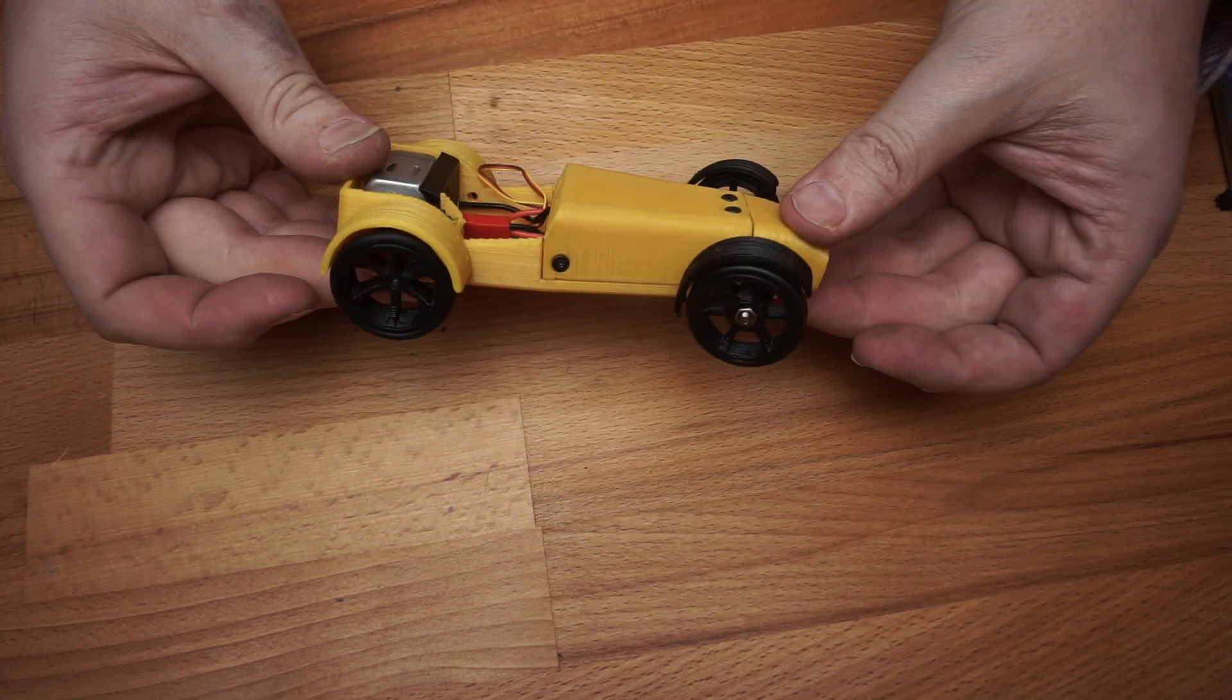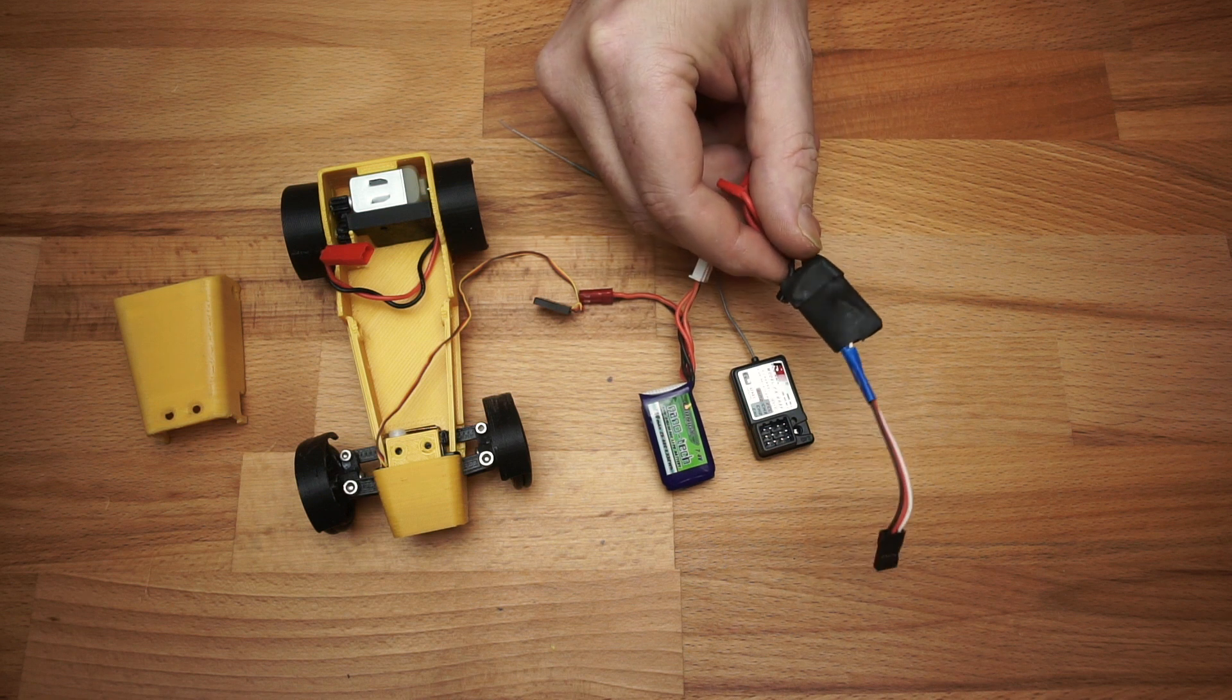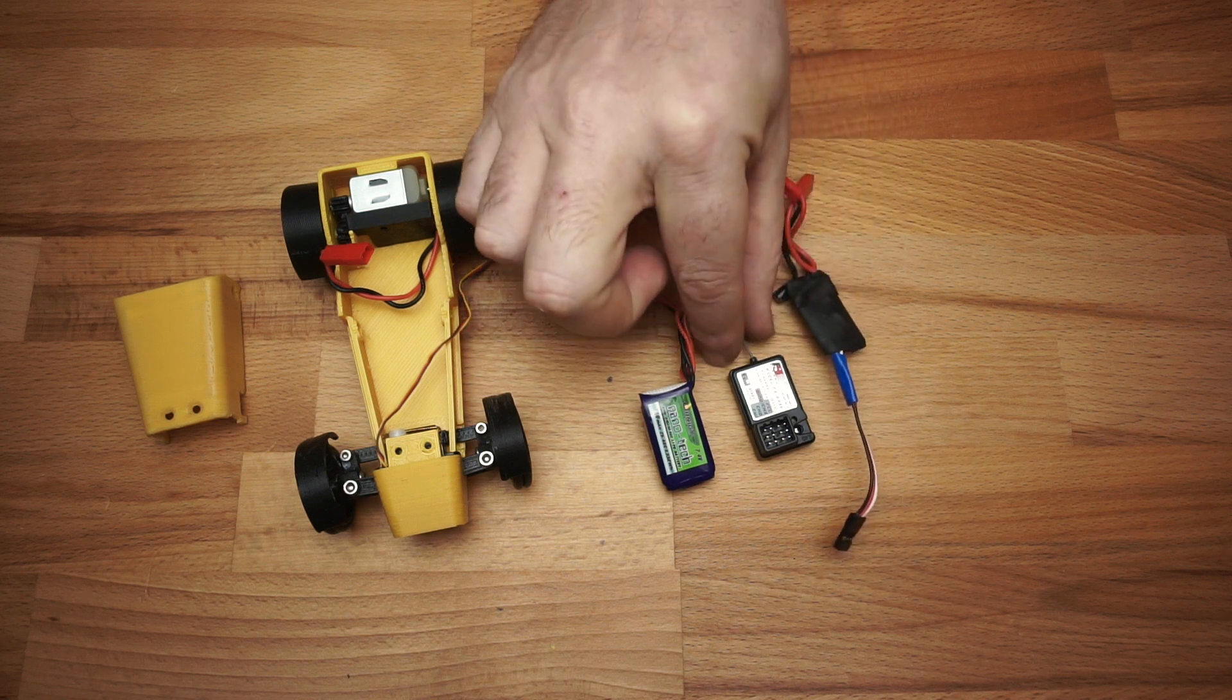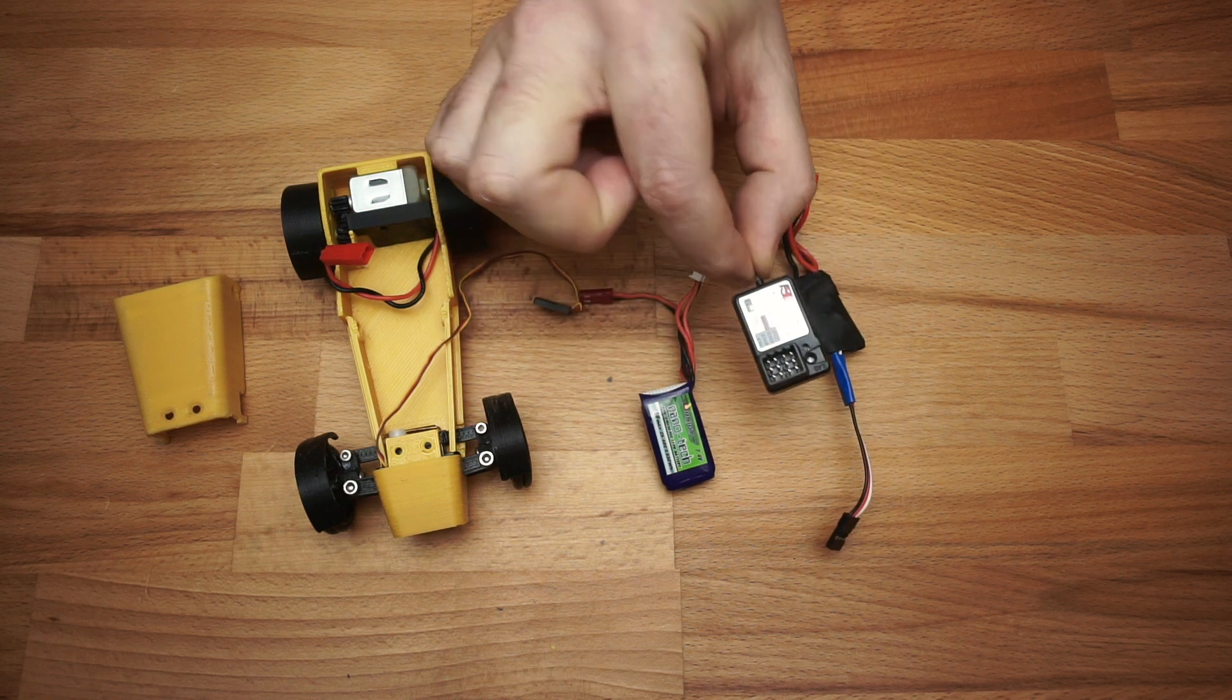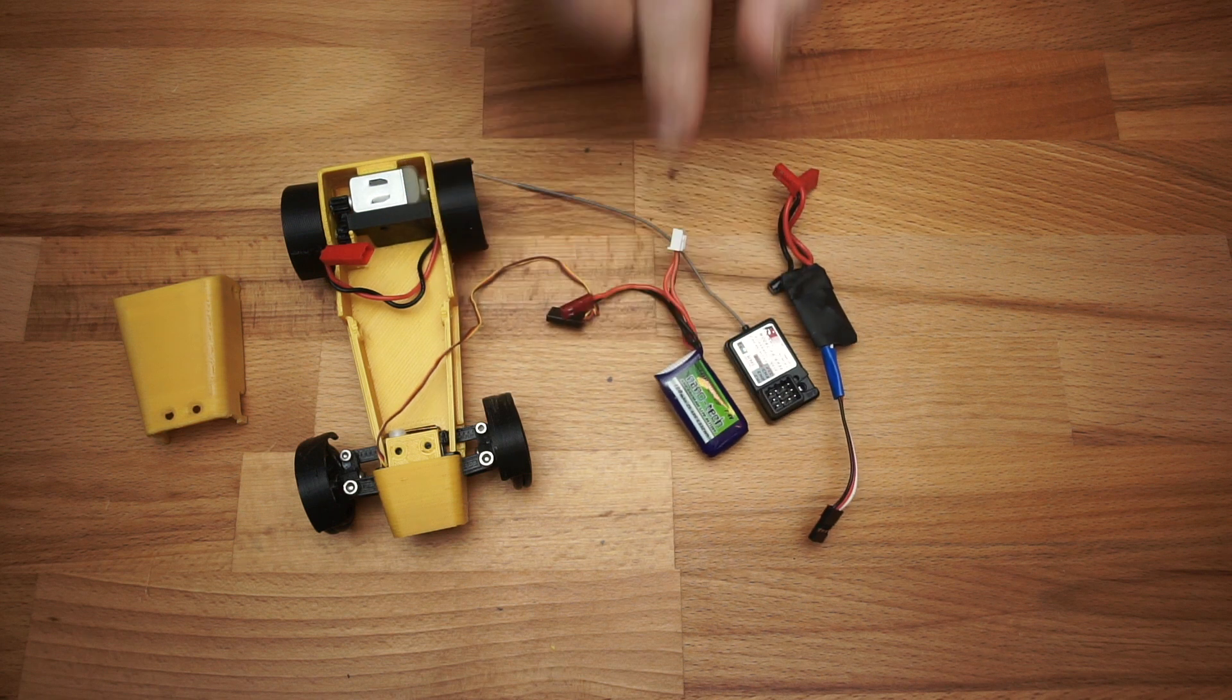Onto the electronics. I found this cheap no-name speed controller on Amazon. There's a standard three channel receiver and a 180mAh LiPo battery. I'll leave links for all this down in the description.